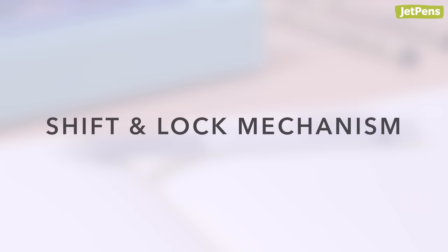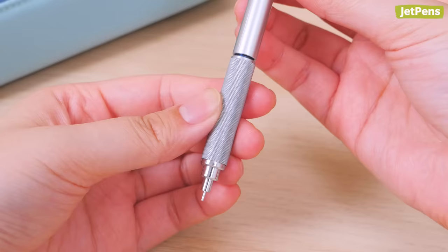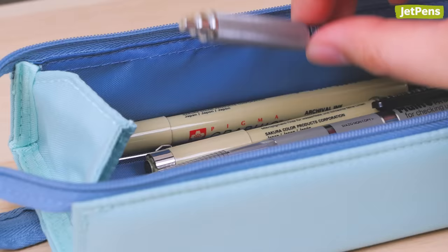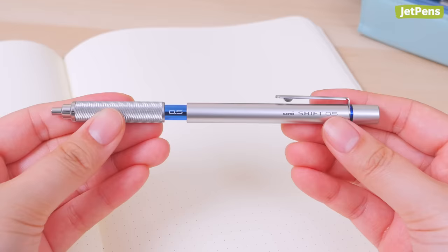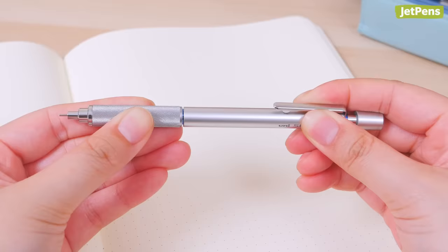Shift and Lock Mechanism Uni Shift Pipe Lock Drafting Pencil. Made for students and designers, Uni's Shift Pipe Lock Drafting Pencil combines form and function. It uses a unique shift and lock mechanism that keeps the pencil tip safe while on the go. To extend the lead sleeve, unlock the pencil by twisting the upper body and sliding it towards the tip, pushing the lead sleeve out. Then lock it in place with another twist.